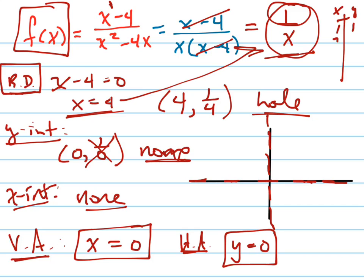If x equals negative 1, y is negative 1. If x equals negative 2, y is negative 1/2. You start to see what's going to happen. To the right, the graph approaches infinity as x gets closer to 0, and it approaches 0 as x goes to positive infinity.